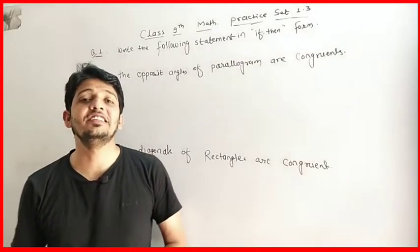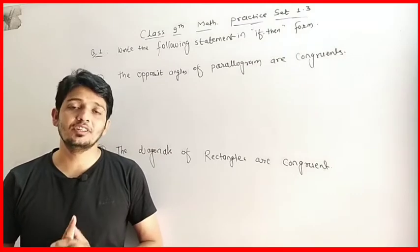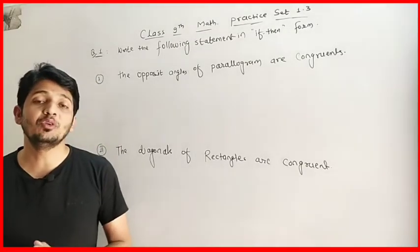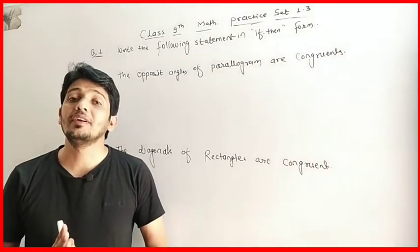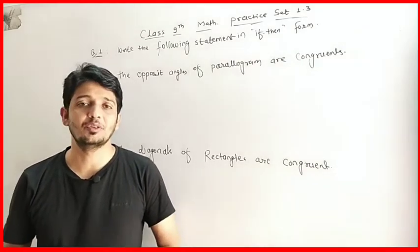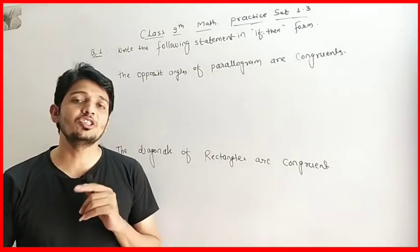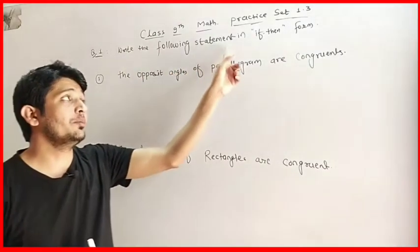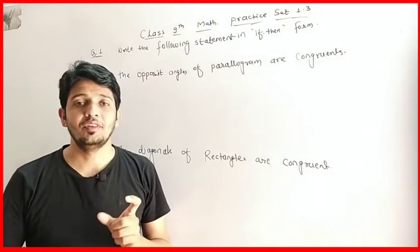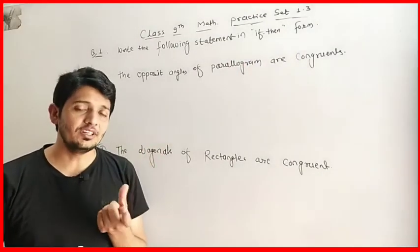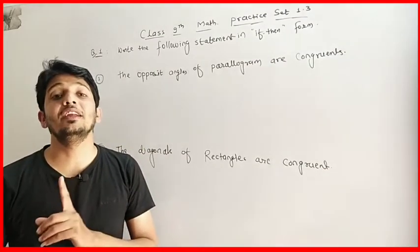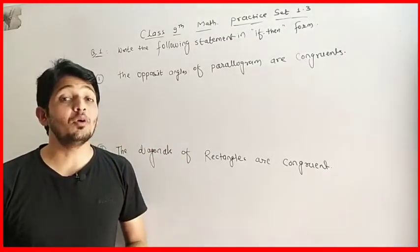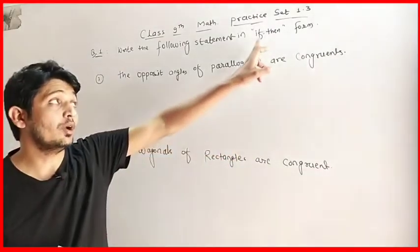Hello students, Hemansar here. Today we are going to start the first question of exercise, or we can say practice set 1.3. In the previous video we have already seen the postulates of Euclid and their examples. Today we are going to understand the first question of practice set 1.3. The first question says: write the following statements in if-then form. We have to convert our statement into conditional statement form using if and then.